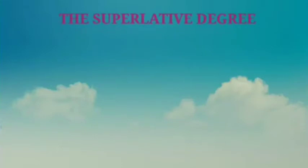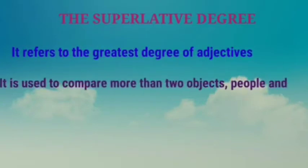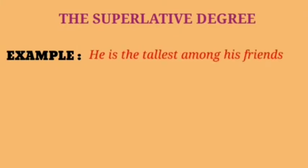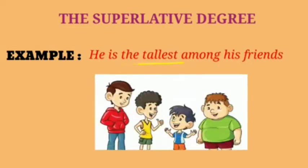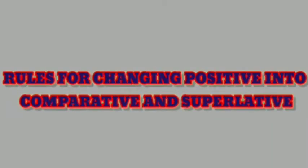The superlative degree refers to the greatest degree of the adjective. It is used to compare more than two objects, people, and places. For example, 'He is the tallest among his friends.' In this sentence, 'tallest' is the superlative degree because many are compared here. Let us see the rules for changing positive into comparative and superlative.